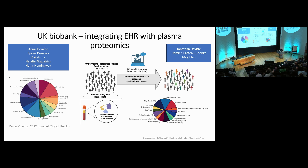Colleagues from UCL developed a phenotyping algorithm to define 308 different physical and mental conditions. Colleagues from GSK applied this algorithm into UK Biobank to derive disease definitions. For the study, we retained 218 of those diseases, for which we had at least 80 incident cases within 10 years of follow-up after the baseline study visit.